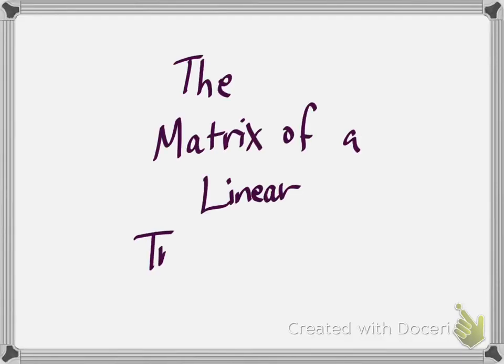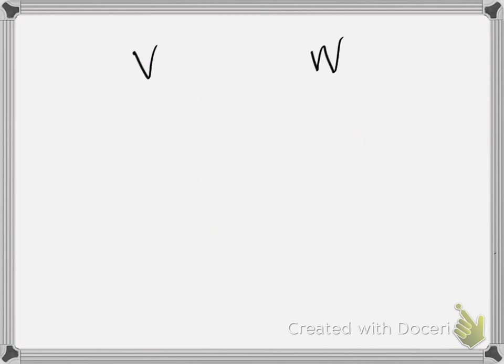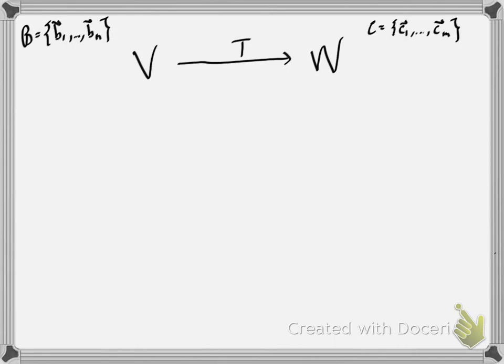Let's talk about the matrix of a linear transformation. Suppose we have two vector spaces V and W, and a linear transformation between them called T. We have a basis B given by vectors B1, B2, all the way up to BN for the space V.